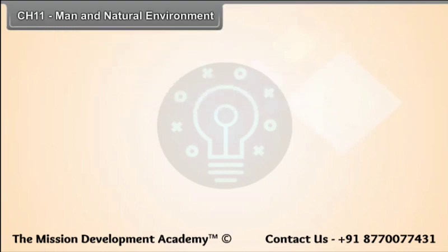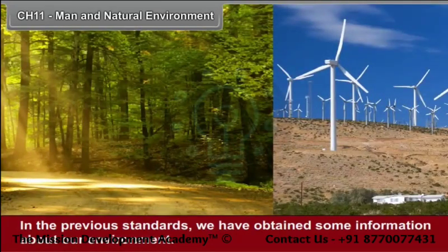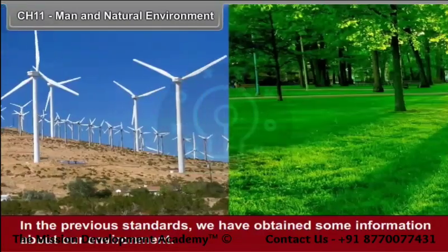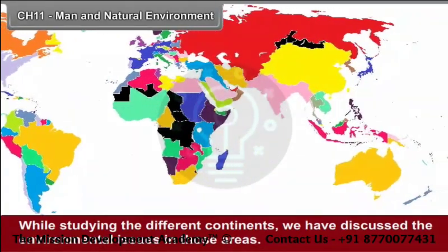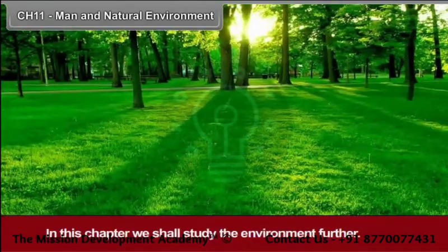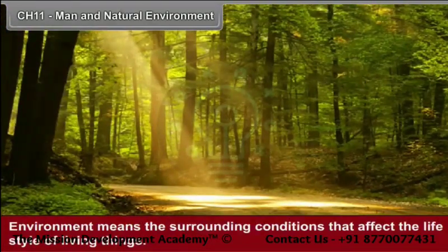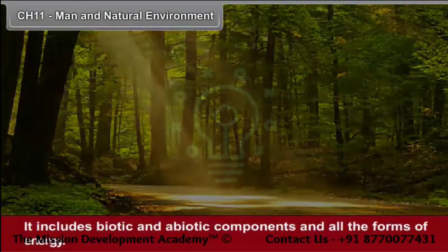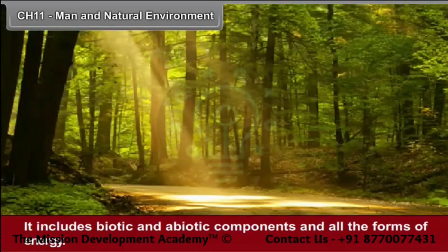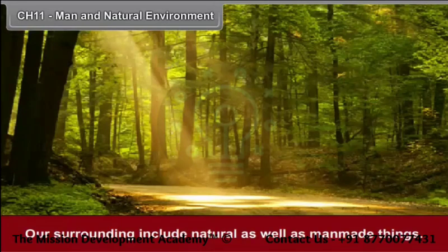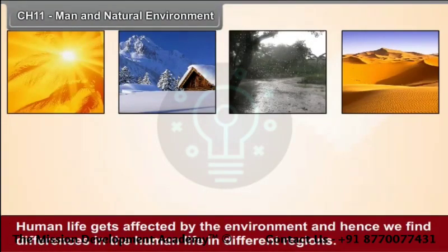Chapter 11: Man and Natural Environment. In the previous standards, we have obtained some information about our environment. While studying the different continents, we have discussed the environmental issues in those areas. In this chapter, we shall study the environment further. Environment means the surrounding conditions that affect the lifestyle of living things. It includes biotic and abiotic components and all forms of energy. Our surroundings include natural as well as man-made things. Human life gets affected by the environment, and hence we find differences in human life in different regions.